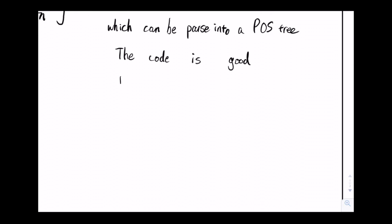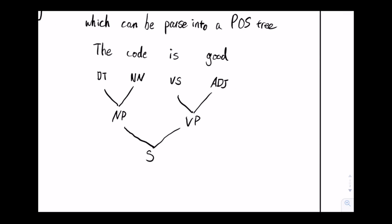For example, the sentence 'the code is good' will be parsed into a tree like this. A simple question that can be generated with this technique is, for example, 'is the code good' by bringing the verb to the front of the sentence.